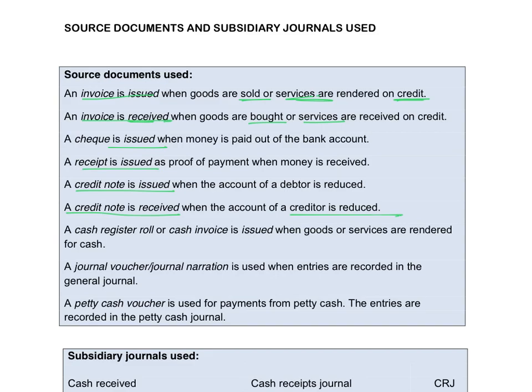A credit note received is received from the creditor because they will reduce your account. A cash register roll or cash invoice is used when services are rendered for cash or you sell goods for cash. You receive money immediately and will issue a till slip or a cash invoice.